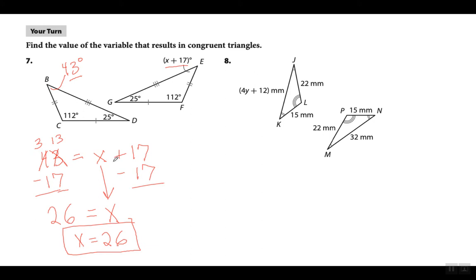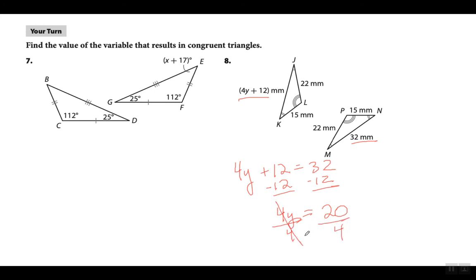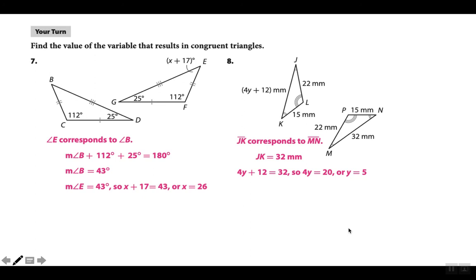x equals 26 for this one. Now let's look at number 8 — same thing. This side corresponds to this side, so I can just set up the equation: 4y + 12 = 32. This one had an extra step but this one I can go straight to the equation. Subtract 12 from both sides: 20 = 4y. Divide both sides by 4: y equals 5. Easy — that took maybe 10 seconds.